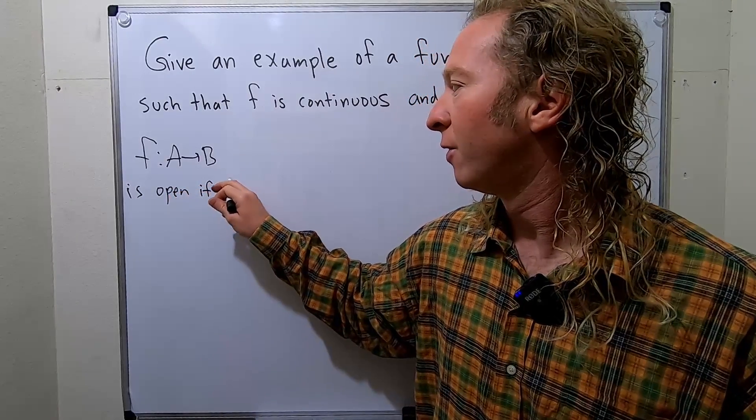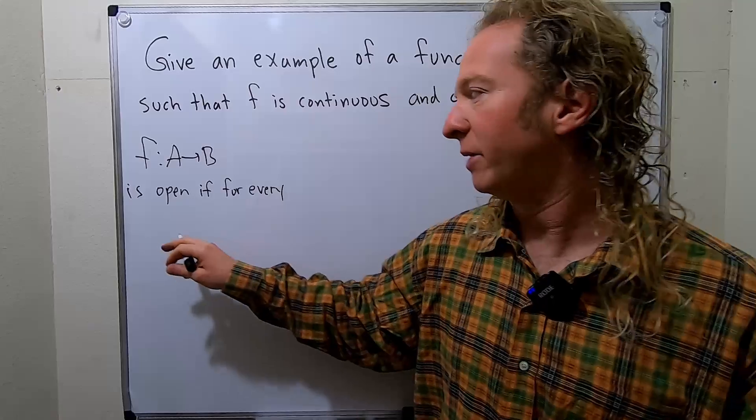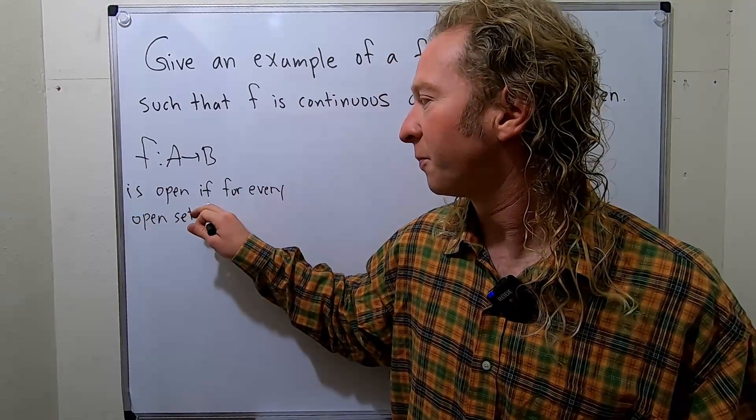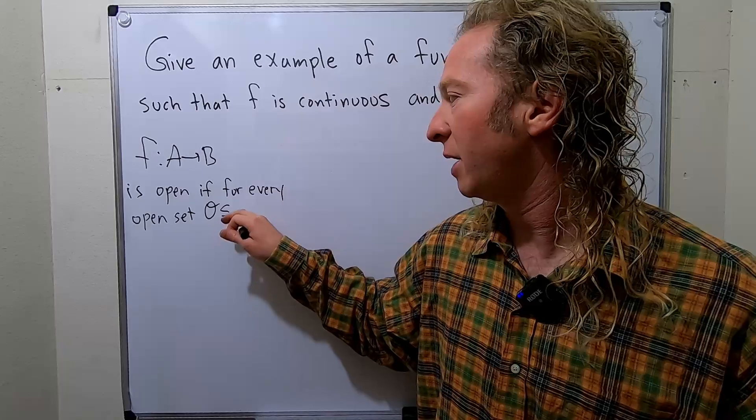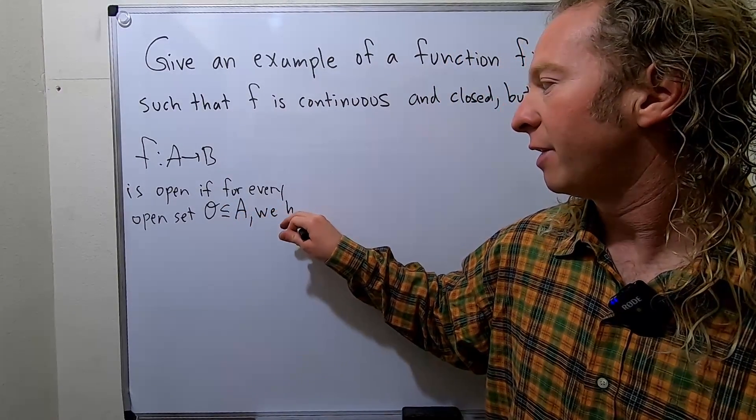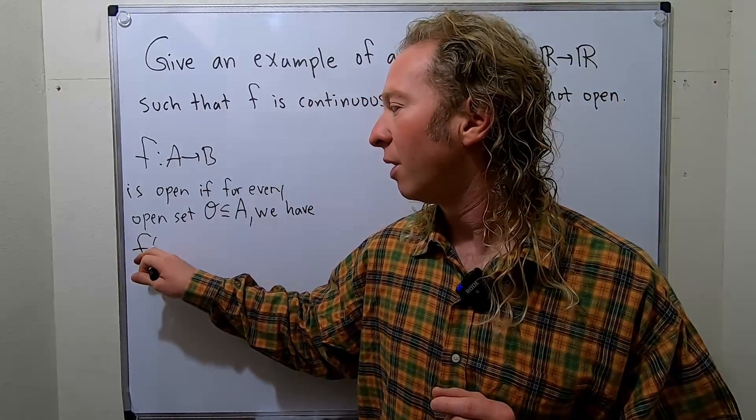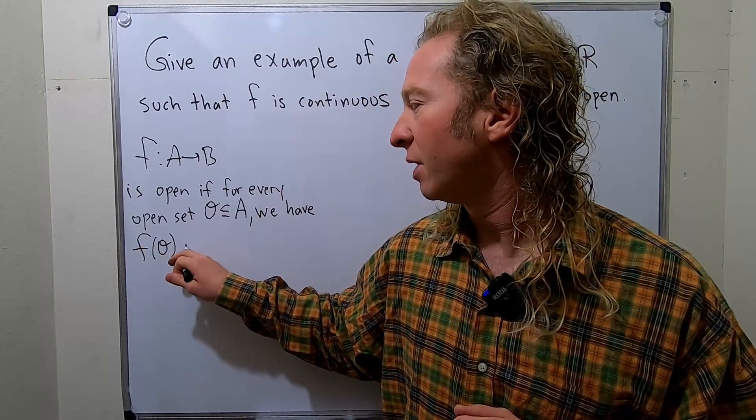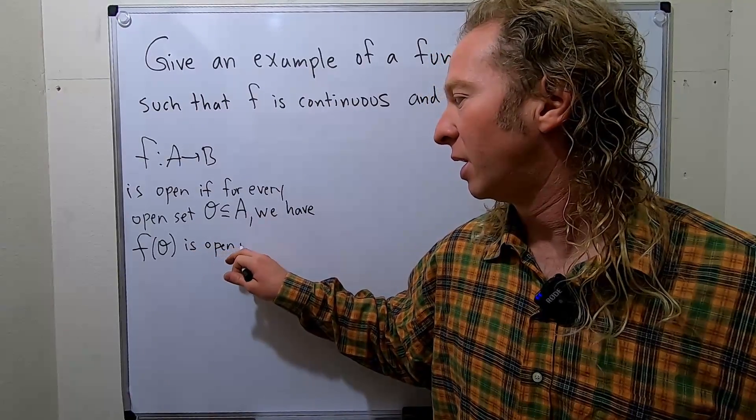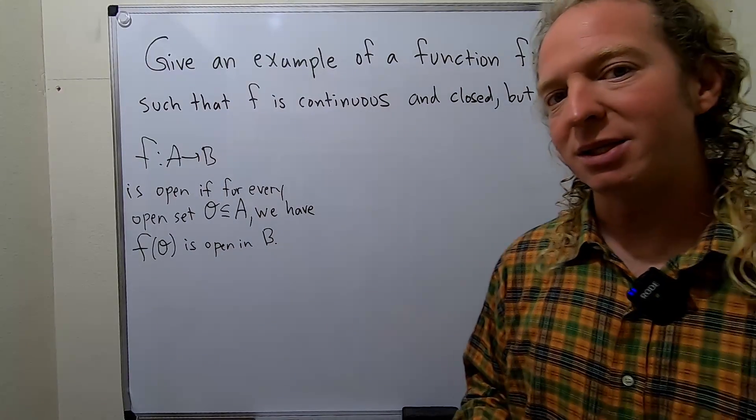If for every open set o contained in a, we have that the image of o under f is open in b. So open functions map open sets to open sets.